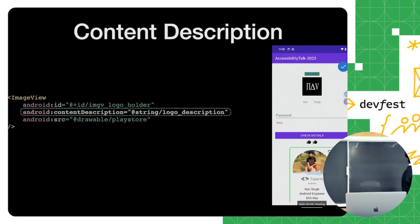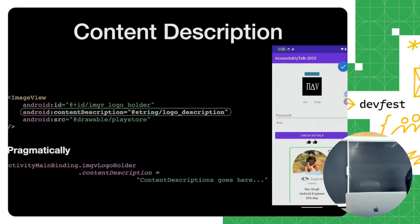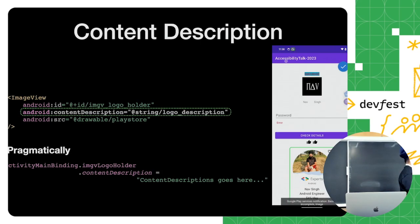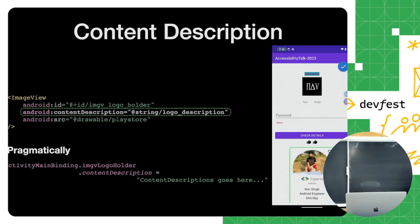If you don't want to provide any content description, I'll cover that in the next slide. Sometimes we need to provide contextual content description — for example, supporting a company where you have custom logos for different clients. In that case you can programmatically set it using the `setContentDescription` method. In Kotlin it's a property accessor — you have the main binding view, the image logo holder's ID, and then you set the content description.